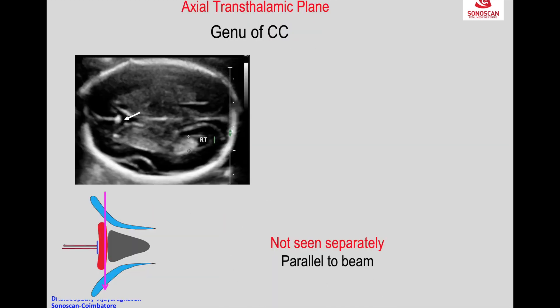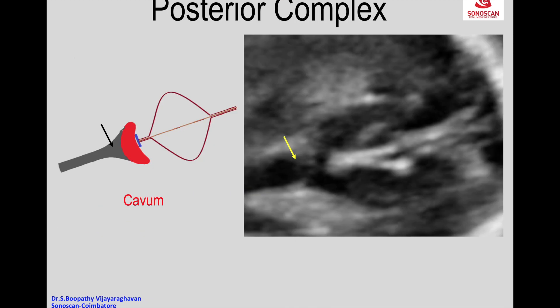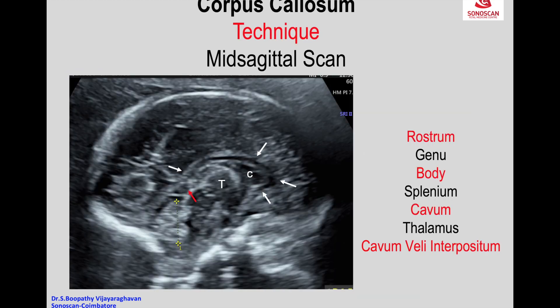To see it better, either you can do EVS in cephalic presentation — because of the high resolution, you will see the genu better. Or you can see the KVM, posterior part of the KVM in the forming part of the posterior complex, and then you see the splenium of the corpus callosum, the callosal sulcus, and the posterior part of the midline. You also see the sylvian fissure on either side, the genu, the thalamus, cavum velum interpositum, and the callosal sulcus.